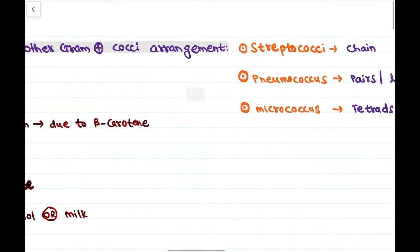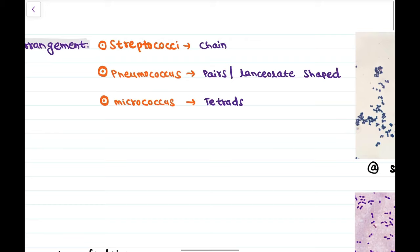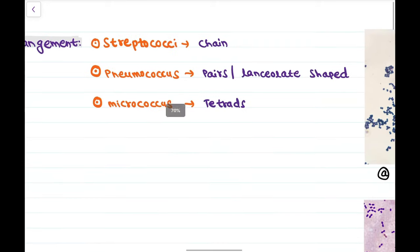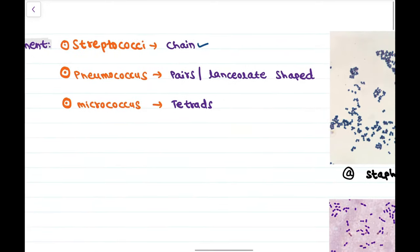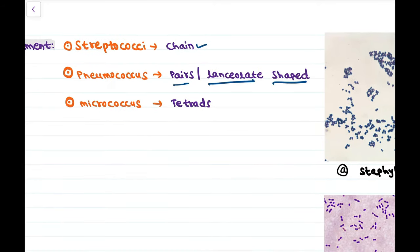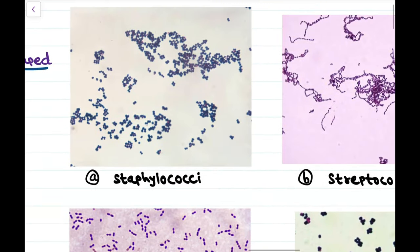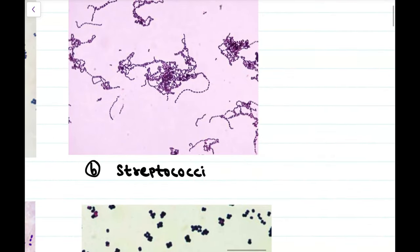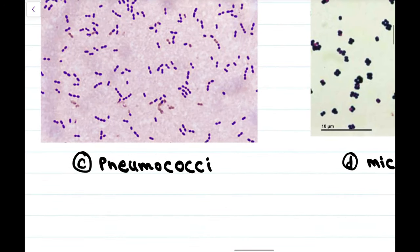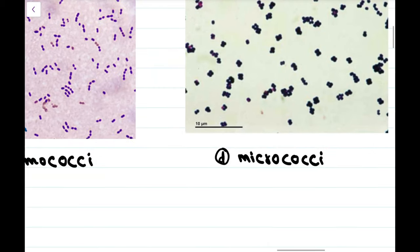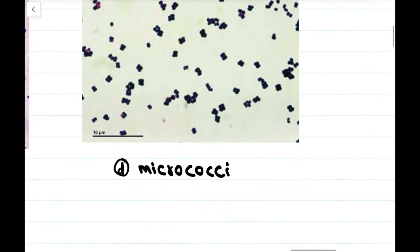Gram positive cocci arrangements: Staphylococci are arranged in clusters, Streptococci are arranged in chains, Pneumococcus is arranged in pairs or lancet-shaped cocci, and Micrococci are arranged in tetrads (groups of four).